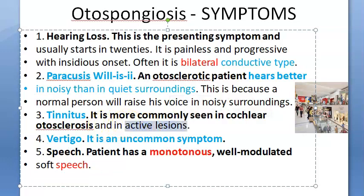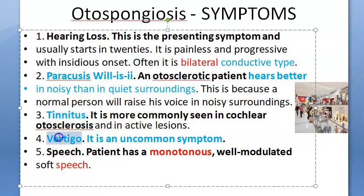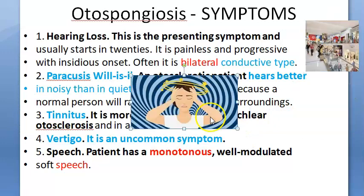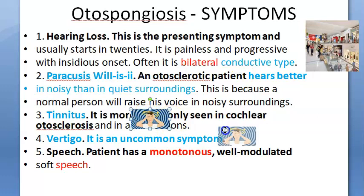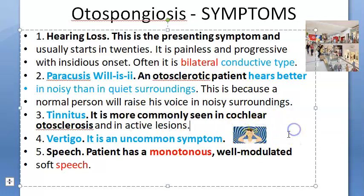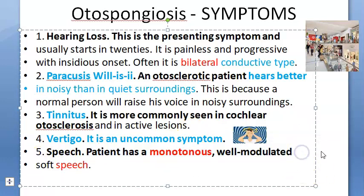Tinnitus — ringing of the ear without any external stimulus — is commonly seen in cochlear otosclerosis and in active lesions. Vertigo, or a spinning sensation with loss of balance and spatial disorientation, can also occur but is an uncommon symptom.